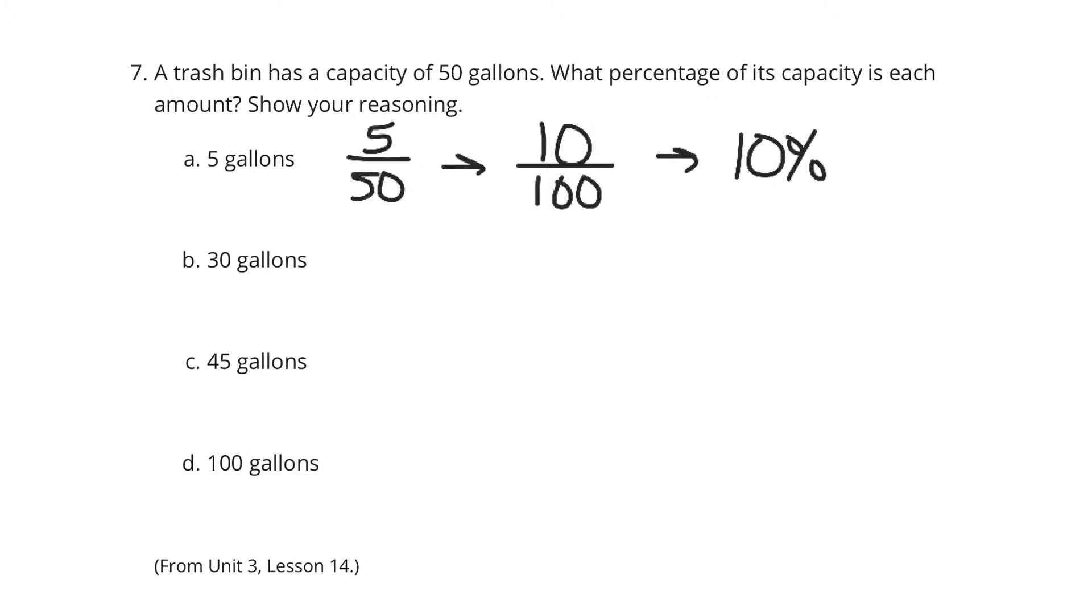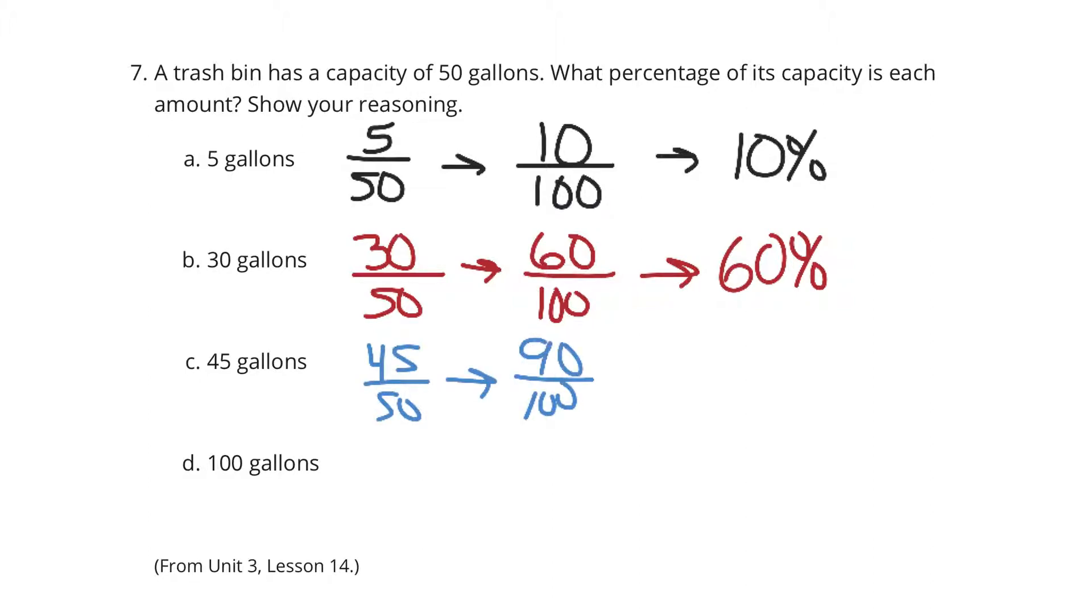Next, 30. Well, 30 out of 50, again multiplying by 2 on top and bottom is 60 over 100, which is 60%. Getting a little bit fuller, 45 out of 50. Multiply top and bottom by 2, you get 90 out of 100, so that's 90%.